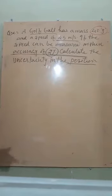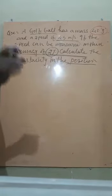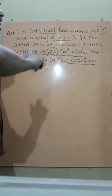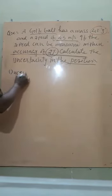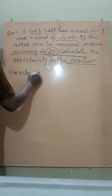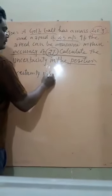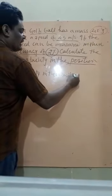That is how much it is getting deviated from its original position. Its velocity is getting changed. So now, uncertainty in the velocity is equal to how many? 2%, so 2 multiplied by what is the velocity.